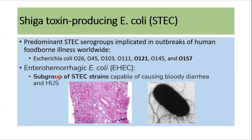When discussing Shiga toxin-producing E. coli, we need to be familiar with one term: enterohemorrhagic E. coli. These are a subgroup of Shiga toxin-producing E. coli that are capable of causing bloody diarrhea and hemolytic uremic syndrome (HUS).